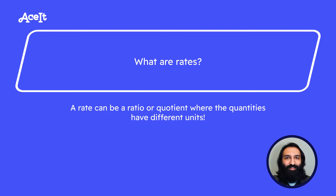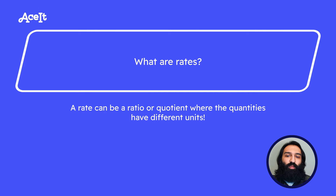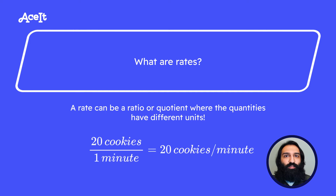Now let's move on to rates. A rate can be a ratio or a proportion where the quantities have different units. For example, how many cookies can you eat in one minute? I think I could eat 20 cookies in one minute — we could write that as 20 cookies per minute. That's a rate.